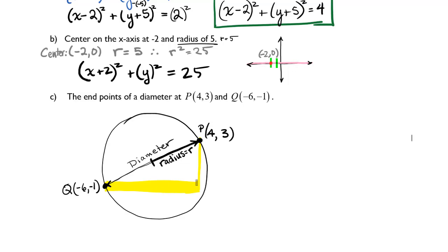We could look at how far this diagonal line goes horizontally and vertically, and then we could find the hypotenuse. If I look at 4 as my larger number minus negative 6, 4 minus negative 6 will give me the horizontal distance. That's 10.